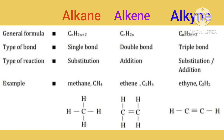The types of hydrocarbons are: alkanes, with general formula CnH2n+2; alkenes, with general formula CnH2n; and alkynes, with general formula CnH2n-2. Each has a different type of bond and type of reaction.